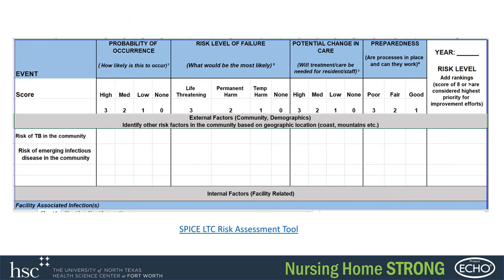The risk assessment tool looks at different external and internal factors. You start putting in different types of events based on things that have happened in your facility — always beginning with any deficiencies from survey, anything regulatory. Then you give each item a ranking based on probability of occurrence, risk level of failure, any potential change in care, and preparedness. You give it a score, and based on that score, these become your top priorities for the upcoming year for ongoing measures in your infection control plan.